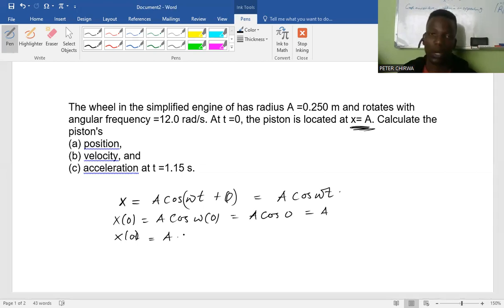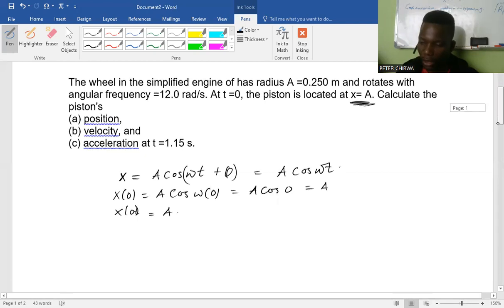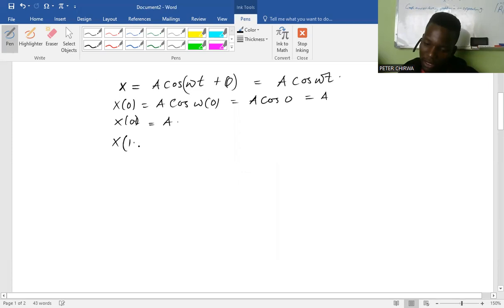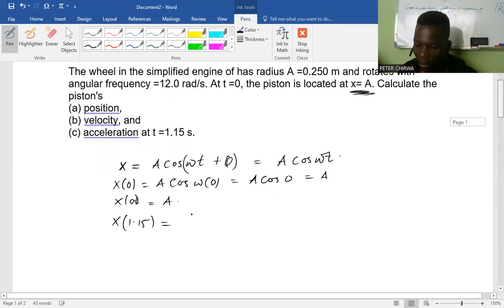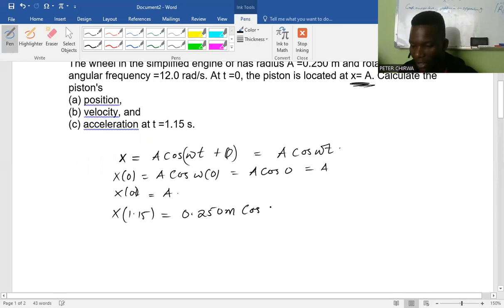So now what about when time is 1.15 seconds? It's basically replacing where there is t with 1.15 seconds. So we are going to have x at 1.15 seconds is equal to amplitude, 0.25 meters, and then we have cos angular frequency 12 rad per second times 1.15 seconds. So we say 12 times 1.15 seconds, we are going to have 13.8 rad.